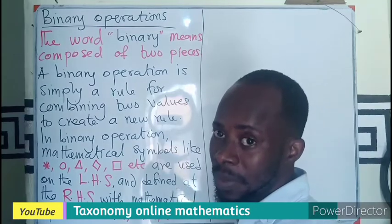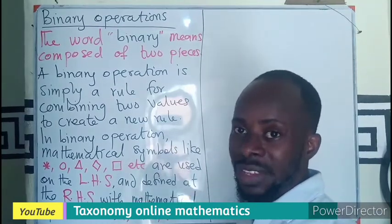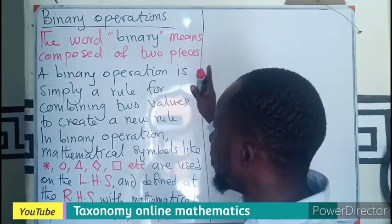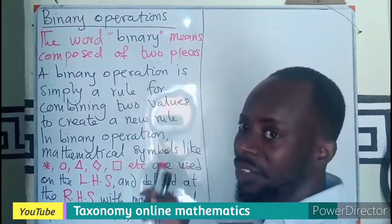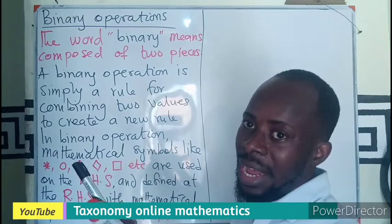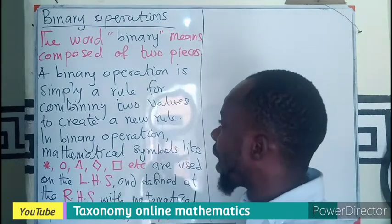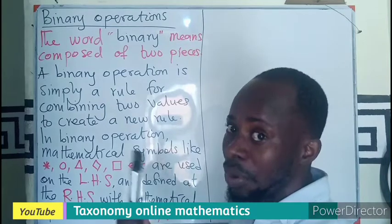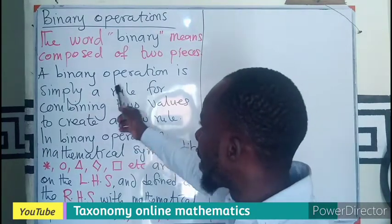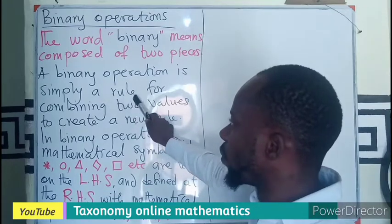The word binary itself means two. If you take it into ICT, it means zeros and ones — that's binary, two. So the word binary means composed of two pieces. In this case it is a binary item, and if it becomes an operation it becomes a binary operation.